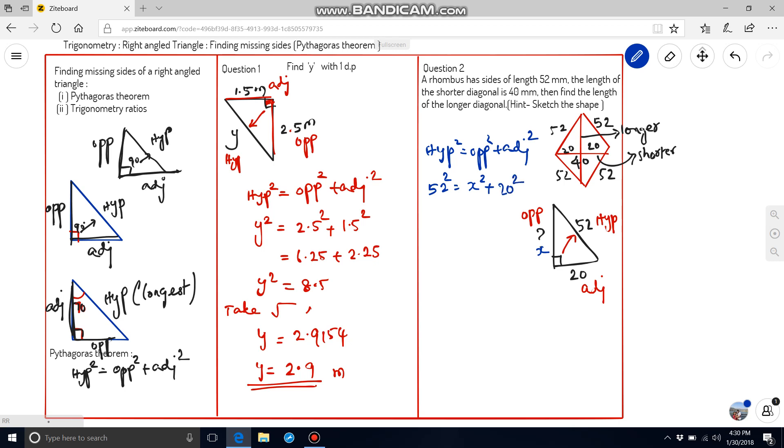Rearranging with x as subject, we are getting 52 square minus 20 square equal to x square. Means, we are moving this positive 20 square to left side. Whenever you are moving the terms, the sign will get changed. Here, 52 square giving 2704 minus 20 square 400. By subtracting these two numbers, 2304 is equal to x square. Again, we have to apply square root. Square root of 2304 will be 48. x is known as 48.